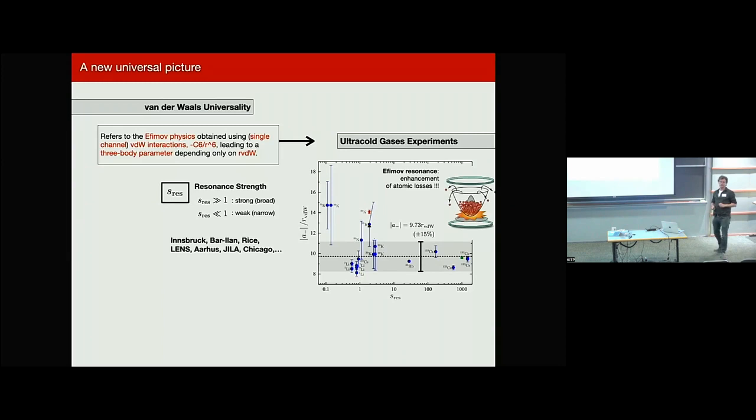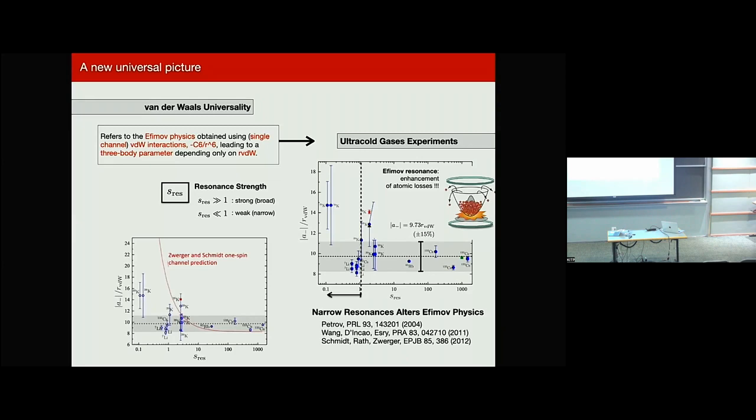That was of course driven by the overwhelming experimental evidence. This is a theory that was built to explain these experiments. And in fact you can see here in this plot I'm showing what we call the a-minus parameter, which is the value of this scattering length in which the Efimov resonance becomes bound on the negative scattering length, and that's measured for atomic losses. You can see that for a wide range of values of this parameter sres, which characterizes the strength of the resonance, it belongs within a 15% chip from the universal prediction which would be just 9.73.